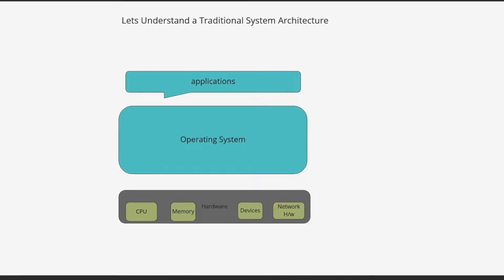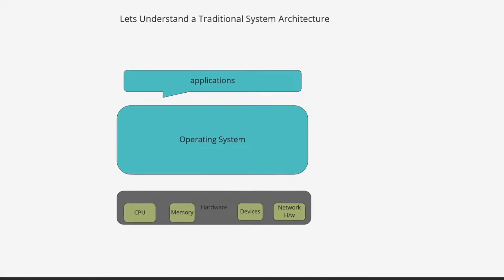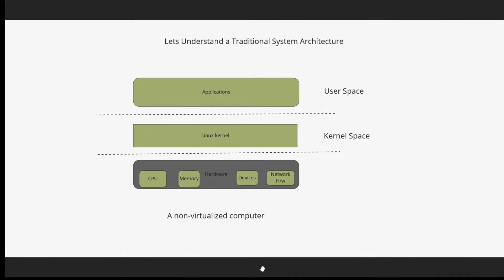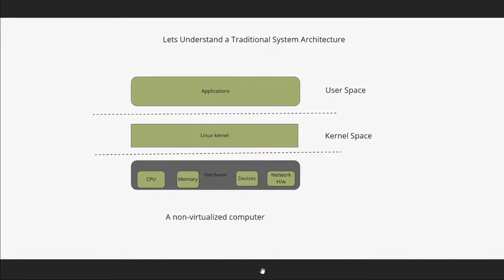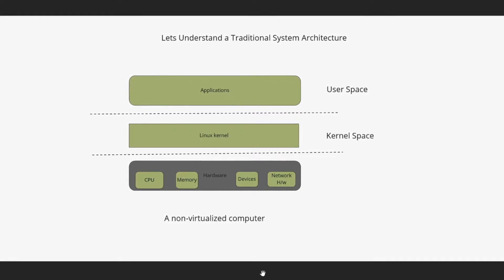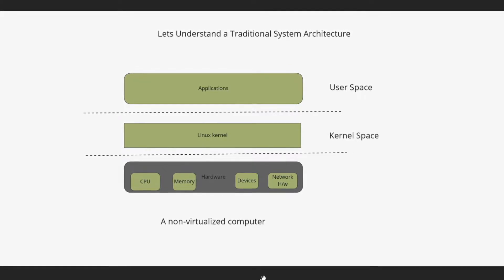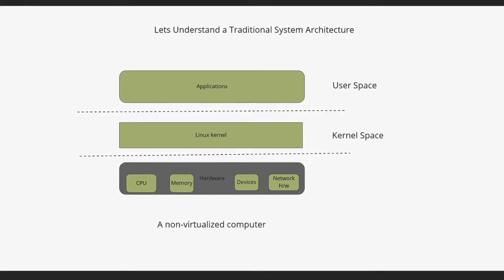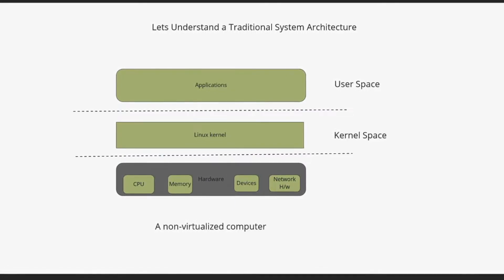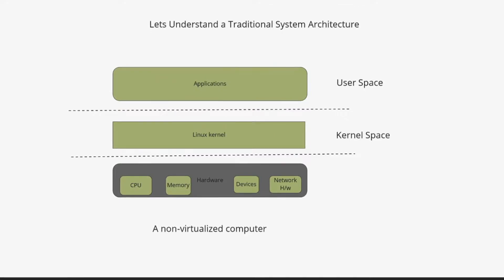You install applications on top of the operating system, but all these applications require access to the physical hardware to run successfully. What facilitates the connection between the application and the physical hardware? That's where the kernel comes into play. The kernel sits on top of hardware, and above that you run multiple applications in user space. The kernel works in its own highly privileged zone called kernel space, where it has direct access to all the hardware.